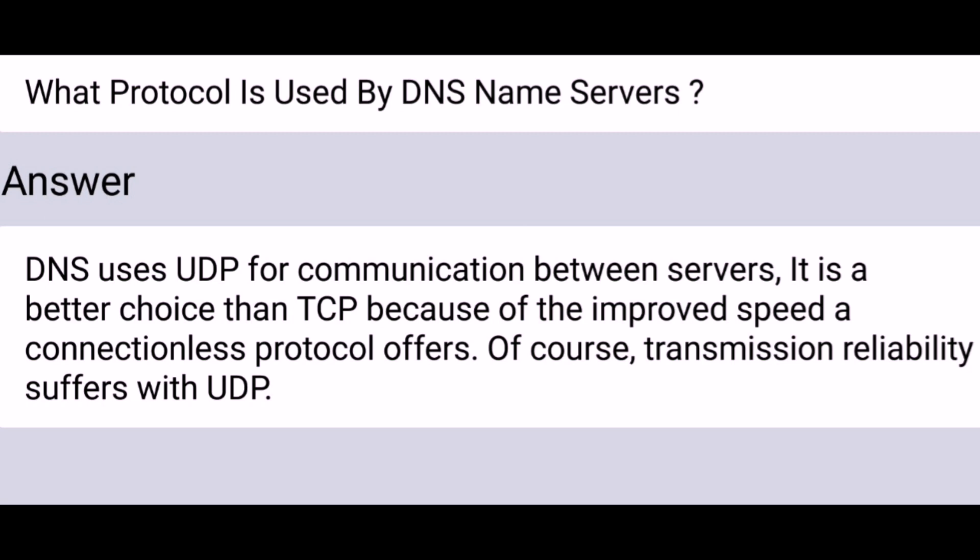What protocol is used by DNS named servers? DNS uses UDP for communication between servers. It is a better choice than TCP because of the improved speed a connectionless protocol offers. Of course, transmission reliability suffers with UDP.